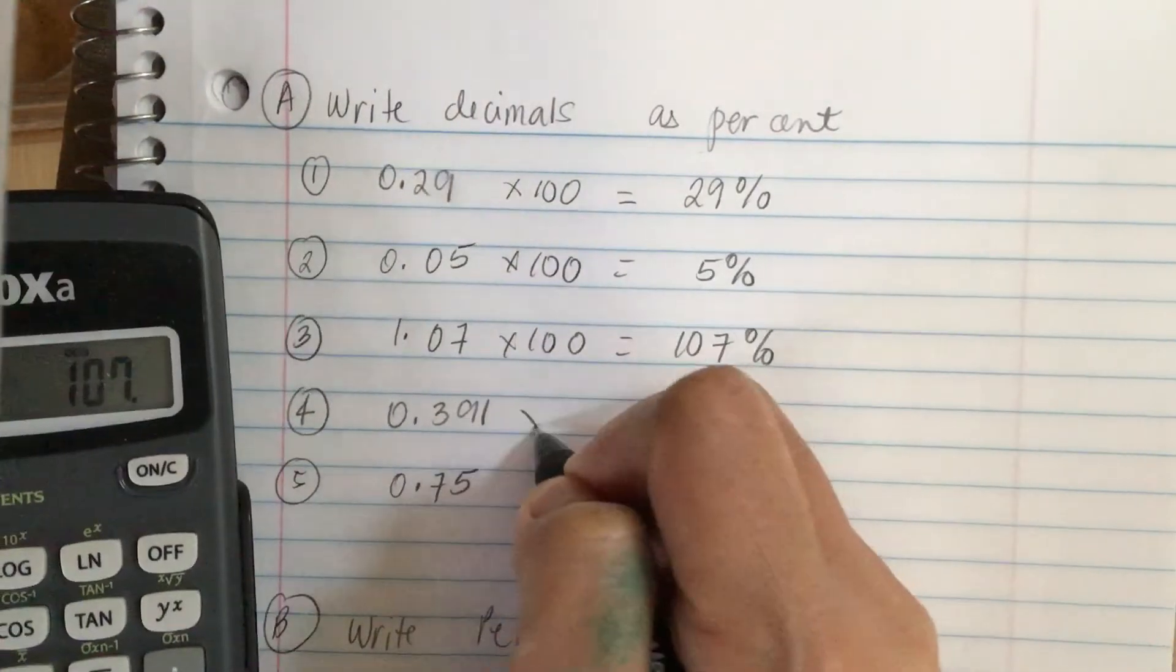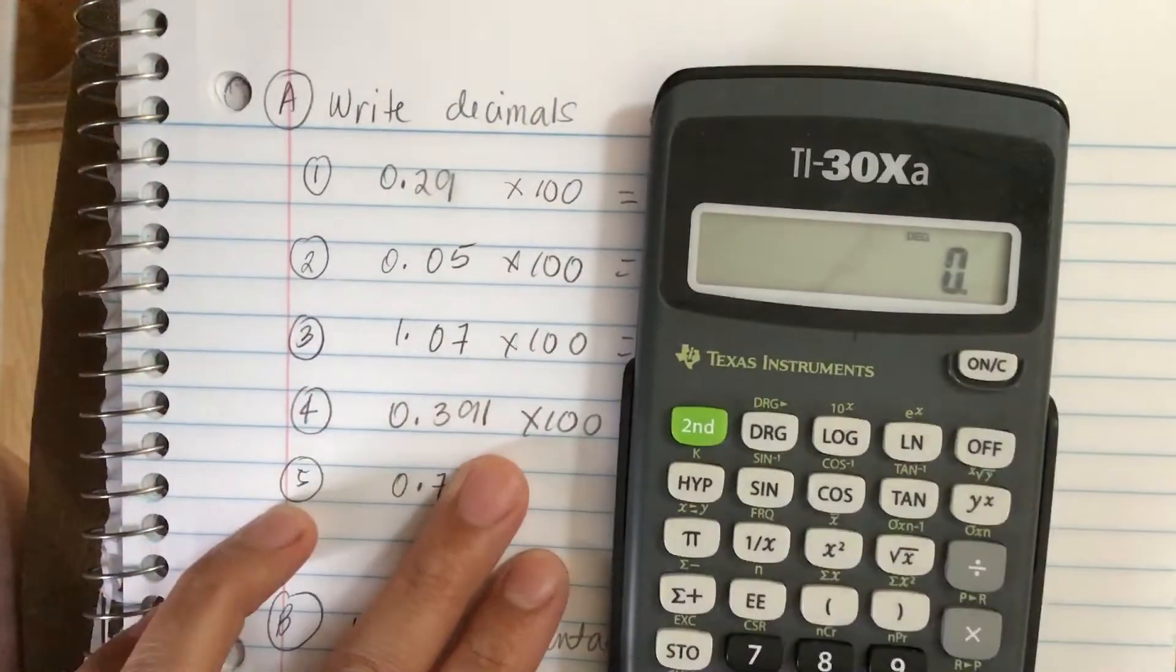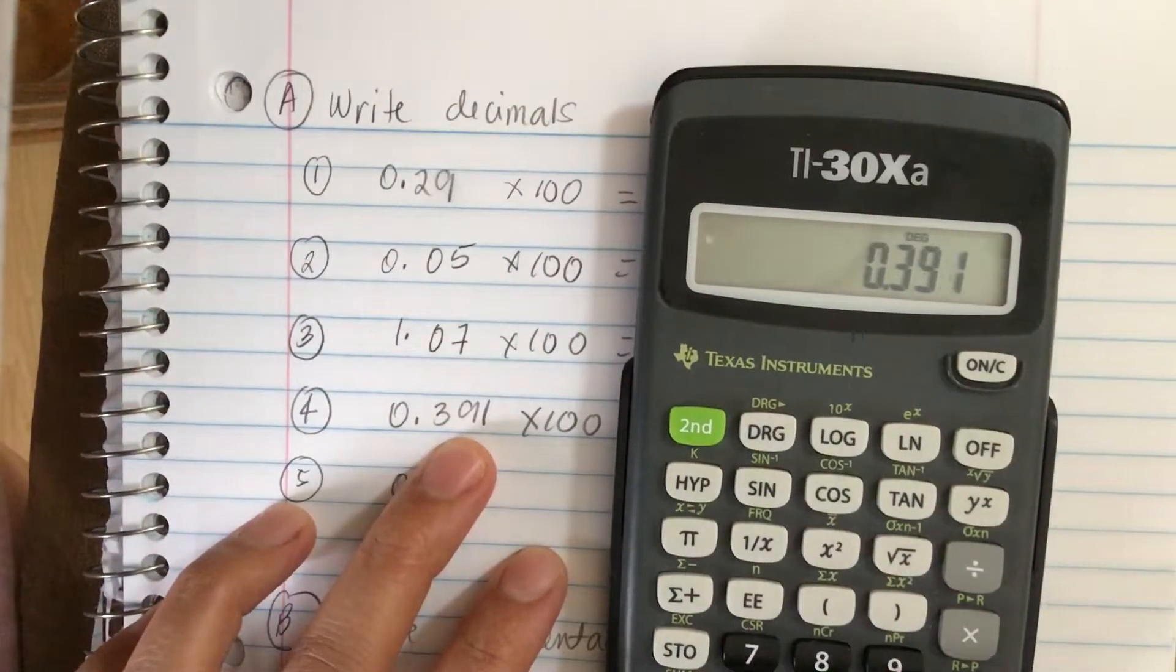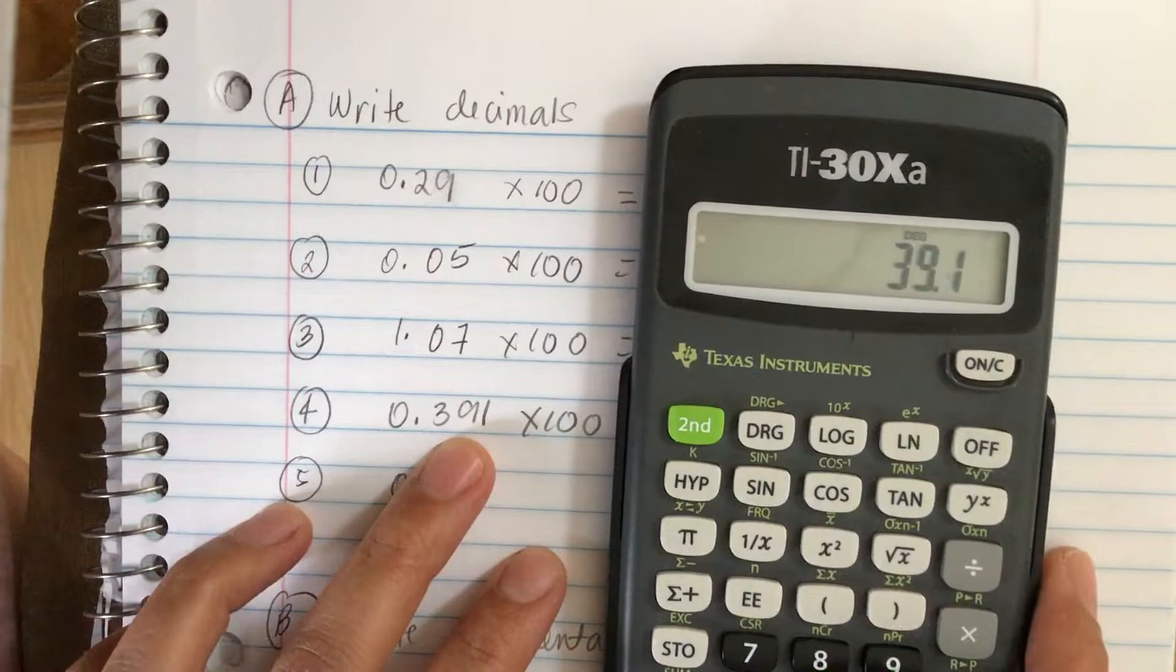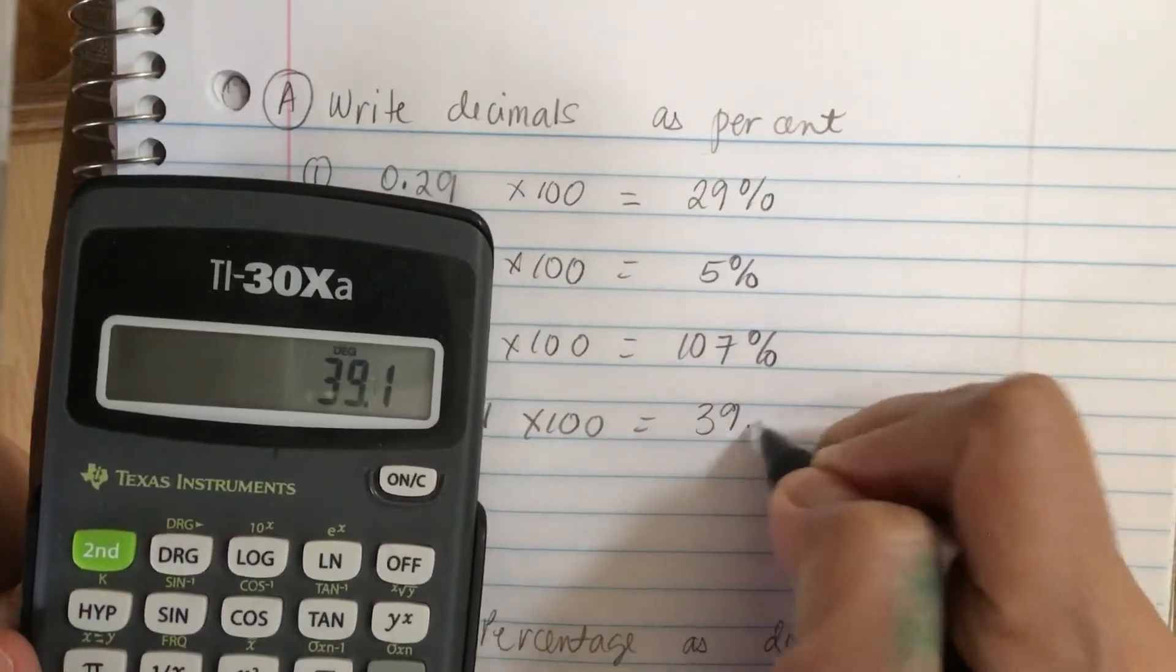So this one, we multiply again, 0.391 times 100. So we got 39.1 percent.